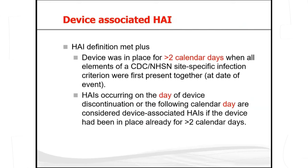The next definition we need to understand is device-associated healthcare-associated infection. To have a healthcare-associated infection, the patient should be admitted to the hospital and the date of event starts on the third day of admission or after. To be device-associated HAI, the patient must have a device — ventilator in VAP, urinary catheter in CAUTI, or central line in CLABSI — and this device must be present for more than two days.